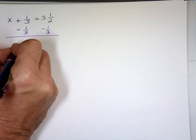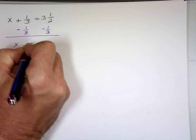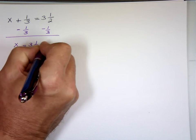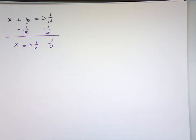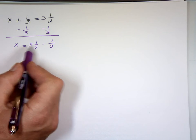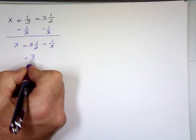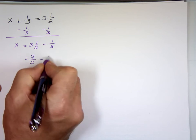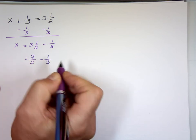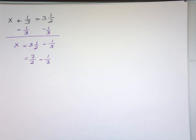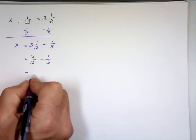All right, so X equals three and one-half minus one-third. Let's go back to Chapter 2. You can change them to improper fractions. Two times three, six and one, seven over two minus one over three. If you're going to add or subtract, what do you need? Common denominator, which is what? Six.